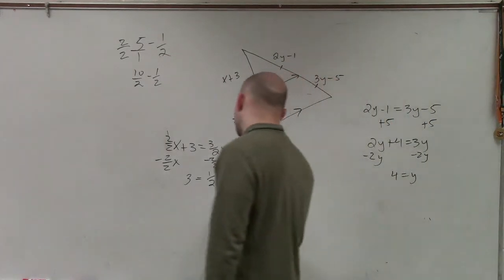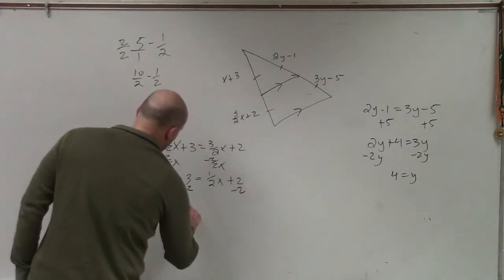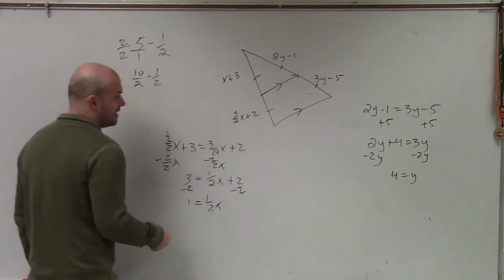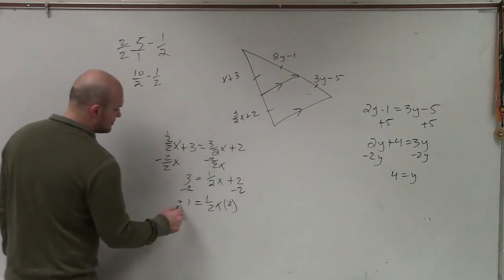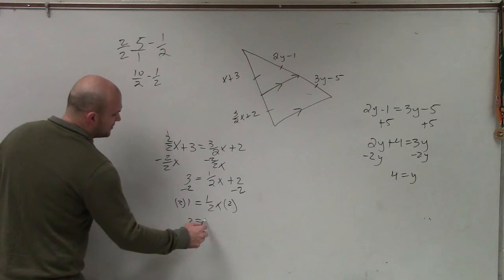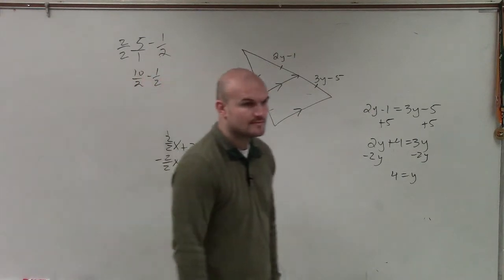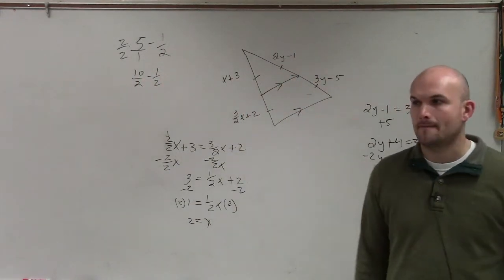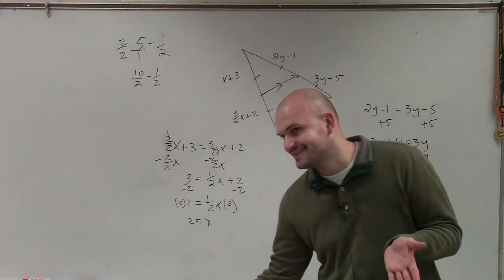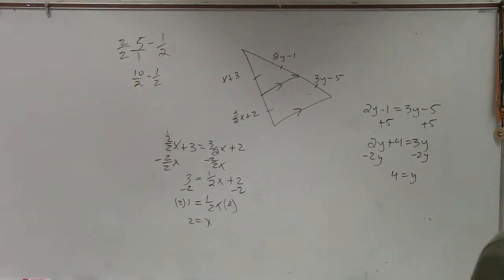Now you get the x by itself, so I subtract 2. And I get 1 equals 1 half x. Then I multiply by 2 on both sides. And I get 2 equals x. Done. OK? So from last time, I get 2 equals x.